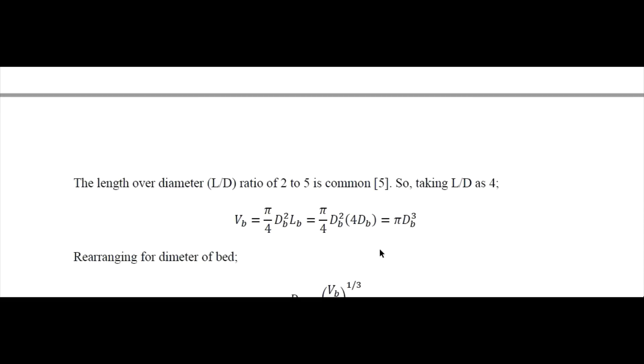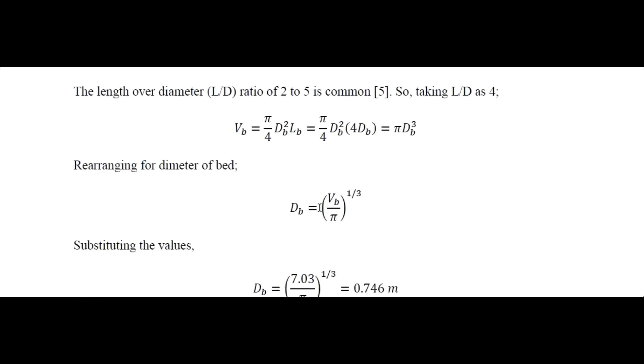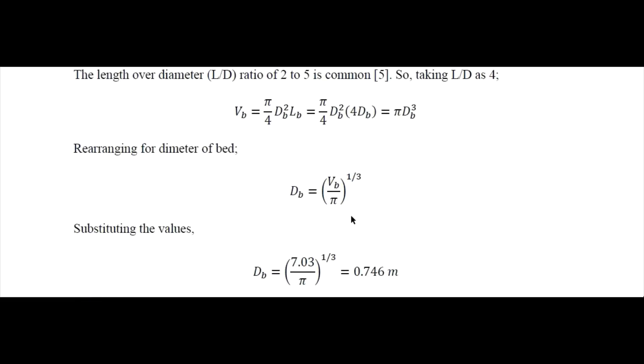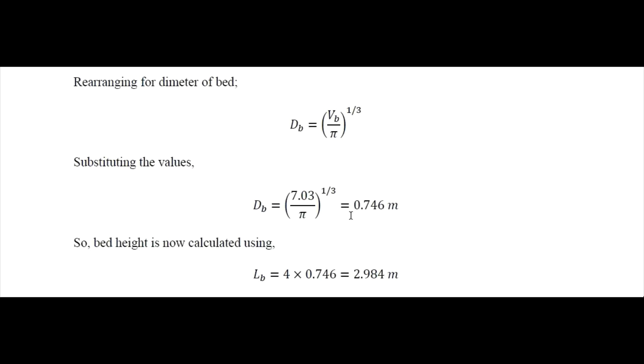So now based on the length by diameter ratio that is 2 to 5, we have taken it as 4, and then using this we can determine the diameter of the bed required. And once we are done with this, we can determine the length or height of the bed.